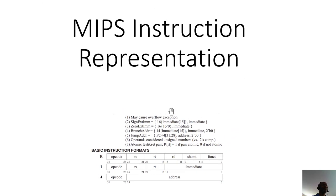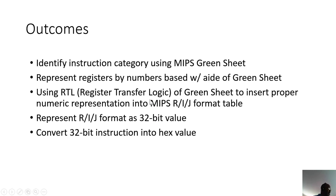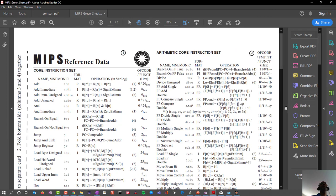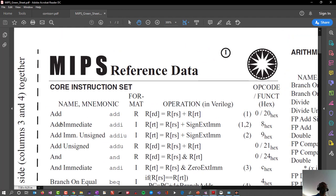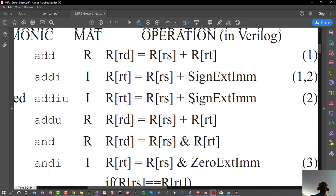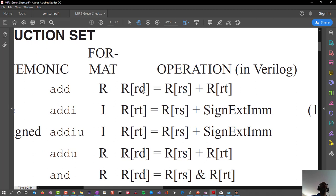The register transfer logic of the green sheet shows how information is being transferred amongst registers. Our instructions will typically work with one, two, or three registers. Which registers are being used — for example for addition — and where that information is being stored, is indicated by that column on the green sheet.